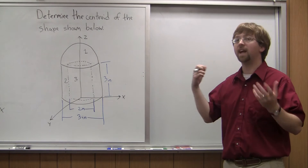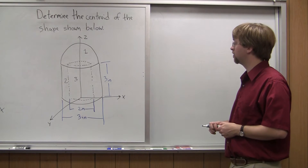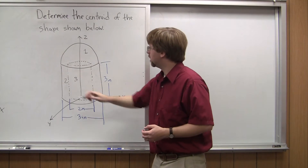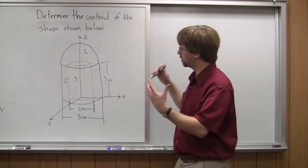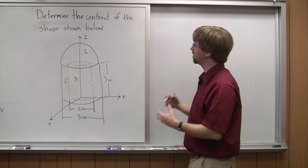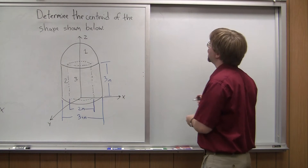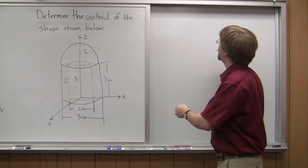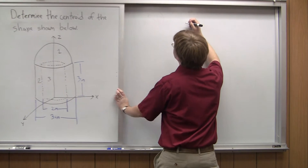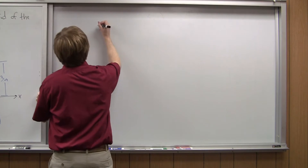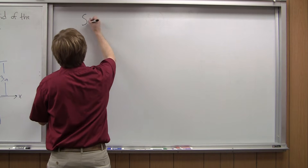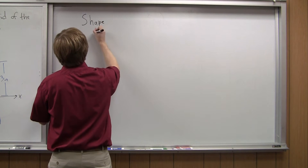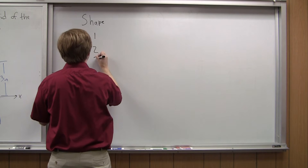Since part three is a cutout, I'm going to count that as a negative volume in my calculations. Now that I've identified my pieces — the hemisphere, the solid cylinder, and the cylindrical cutout — I can start figuring out my different values. Let me make my table. I have shapes one, two, and three.